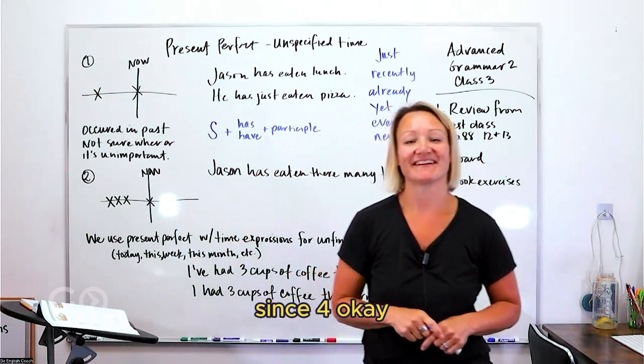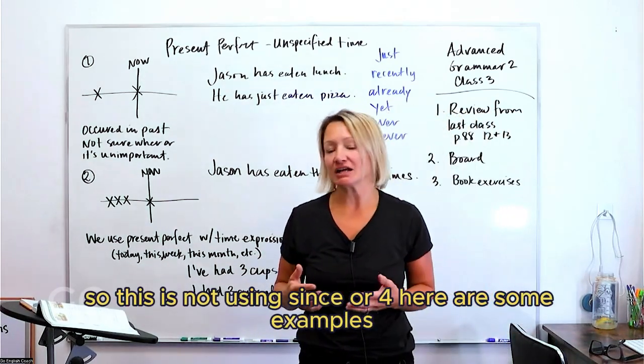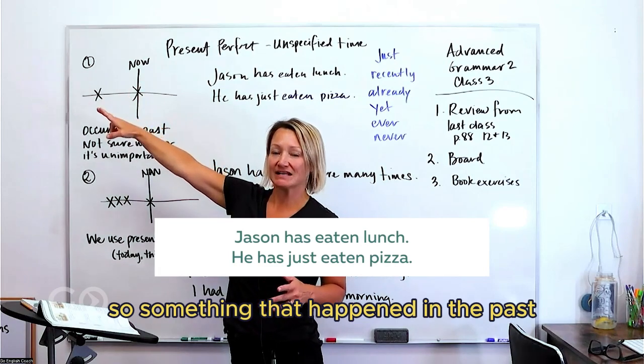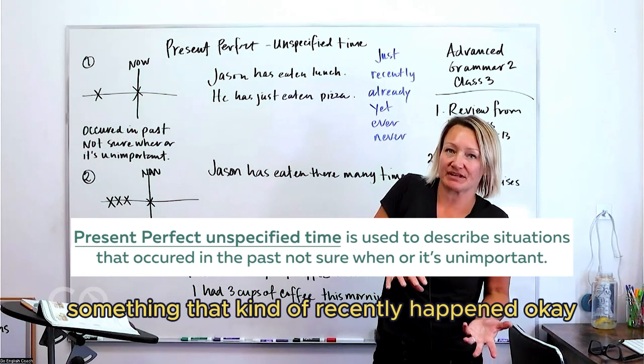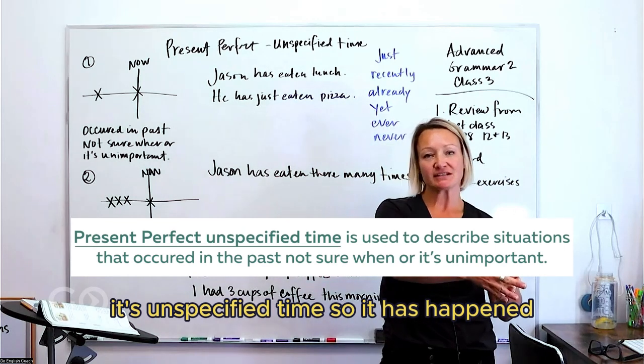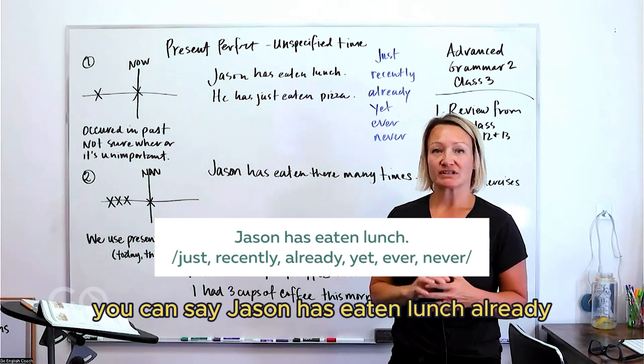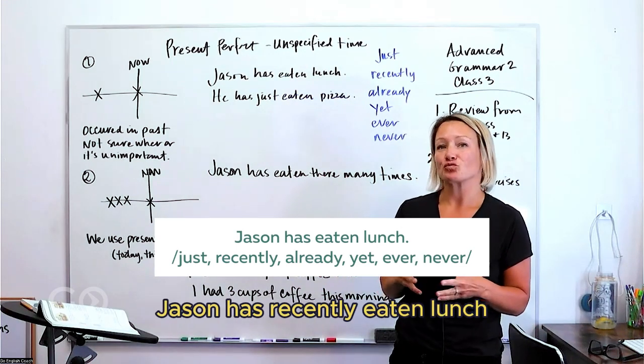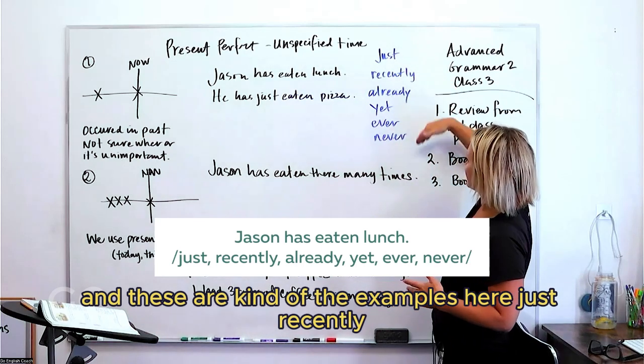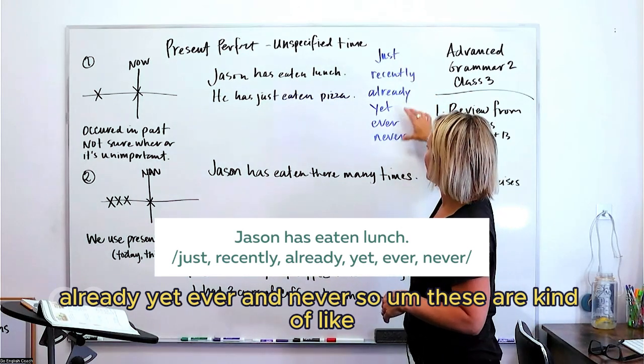Since, for, since, for. Okay, what we've got here behind me is another kind of way or an example that we use the present perfect. So this is not using since or for. Here are some examples. So something that happened in the past but it's talking about something that kind of recently happened. Okay, so you're using it's unspecified time. So it has happened but we're not necessarily sure when. Okay, so here's your example: Jason has eaten lunch. You can say Jason has eaten lunch already, Jason has recently eaten lunch, Jason has just eaten lunch. And these are kind of the examples here: just, recently, already, yet, ever, and never.